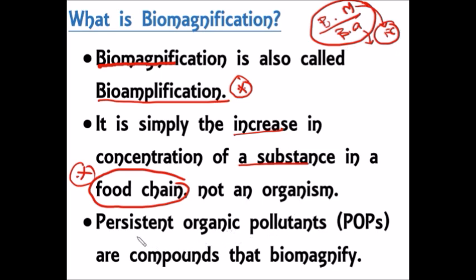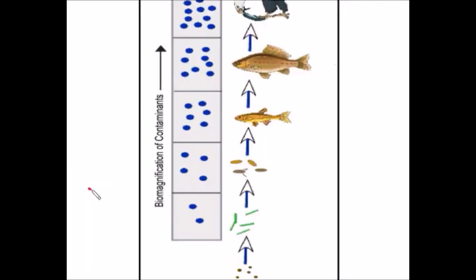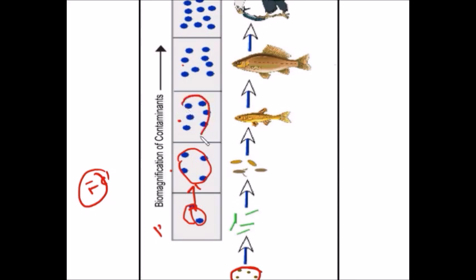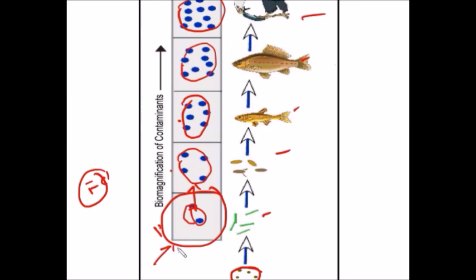Examples of Biomagnification are Persistent Organic Pollutants, which can bio-magnify. This image shows the food chain of the ocean, or the marine food chain, where contaminants reach from the producer to the consumers — primary, secondary, and tertiary consumers. Whenever we pass from the producer to the next trophic level, the concentration of the substance increases — this is called Biomagnification. It involves various organisms, whereas Bioaccumulation only occurs within a single organism.